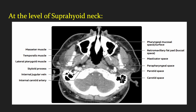This is the axial section taken at the level of the suprahyoid neck. Here we can appreciate the masticator space. Posteriorly to the masticator space we have the parotid space. In the middle we have the pharyngeal mucosal space which continues below as the visceral space. Posteriorly we have the perivertebral space which splits anteriorly into the prevertebral compartment and posteriorly as the paraspinal compartment. We also have the carotid space, and in front of the carotid space is the parapharyngeal space which has fat as its component.